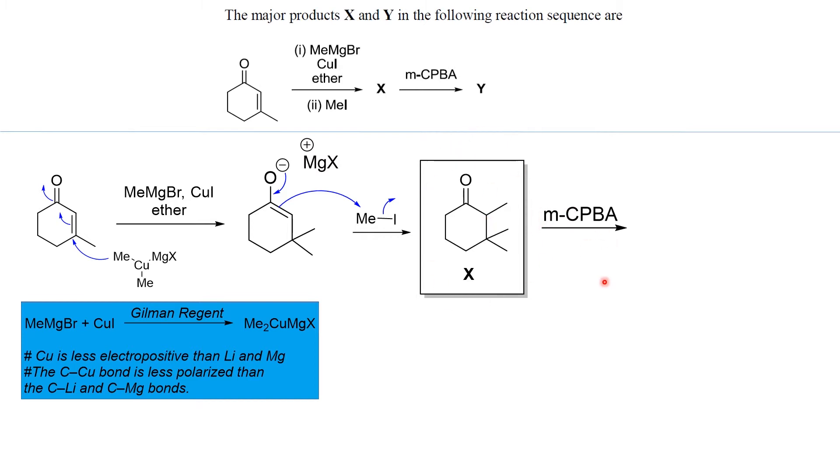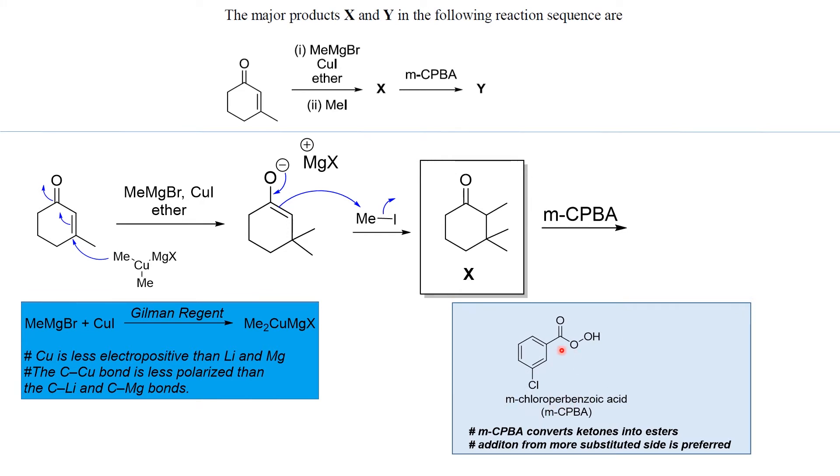Now the next step we are using, we treat ketone with metachloroperbenzoic acid. And if we know, metachloroperbenzoic acid is nothing but having a chloro—it is a peracid. A peracid is known to carry out epoxidation reaction.